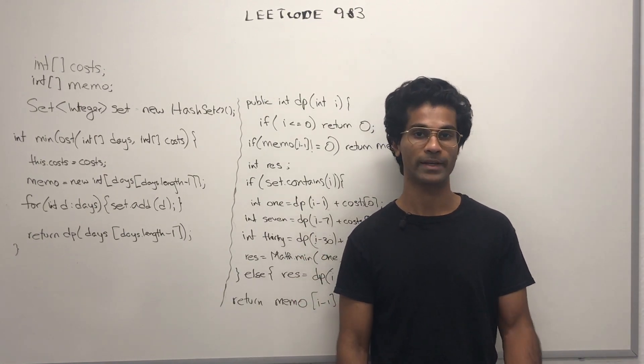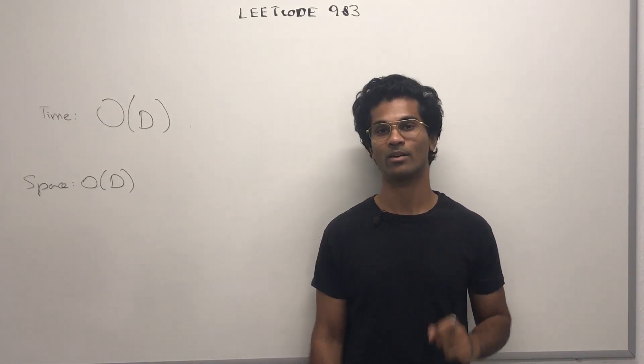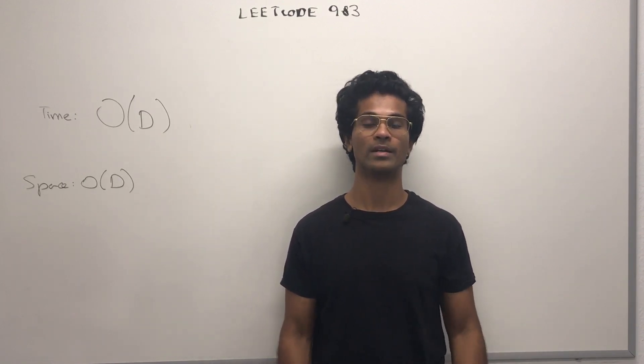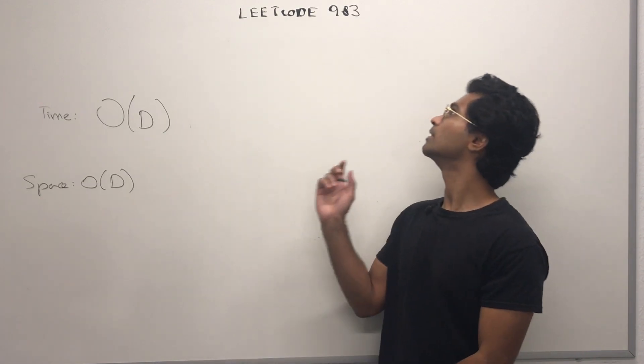Now, let's look at the complexities. The time complexity is going to be O of D, where D is the last day of travel. The space complexity is going to be O of D, because that's the size of the array.